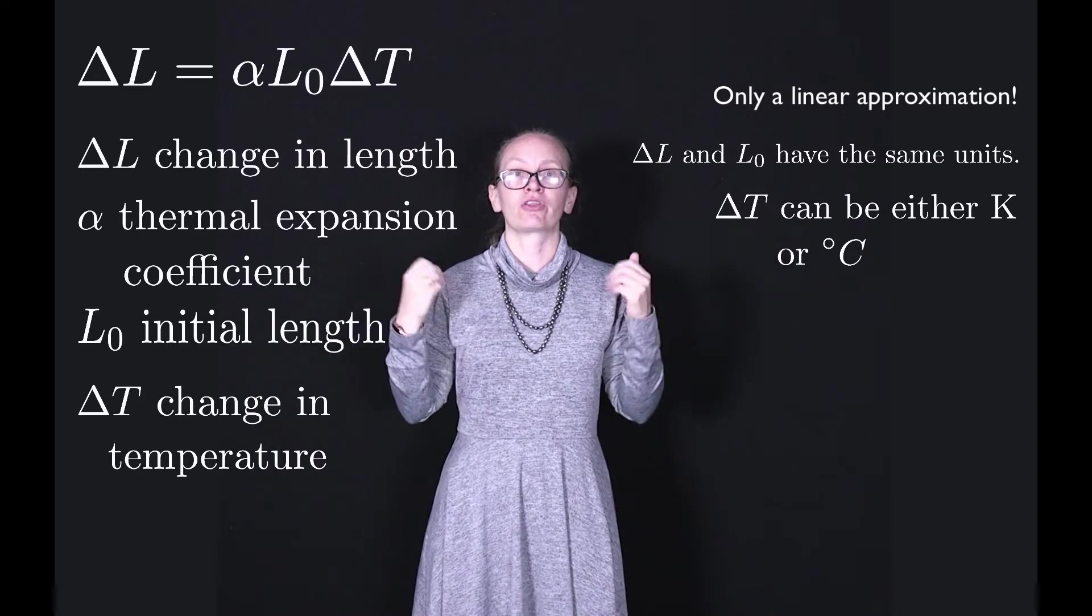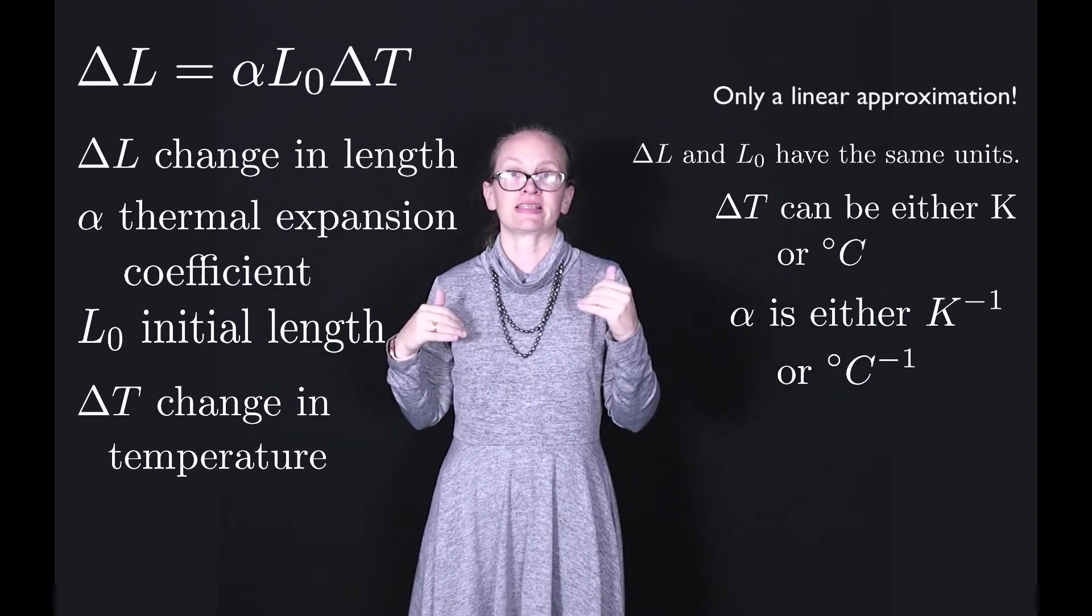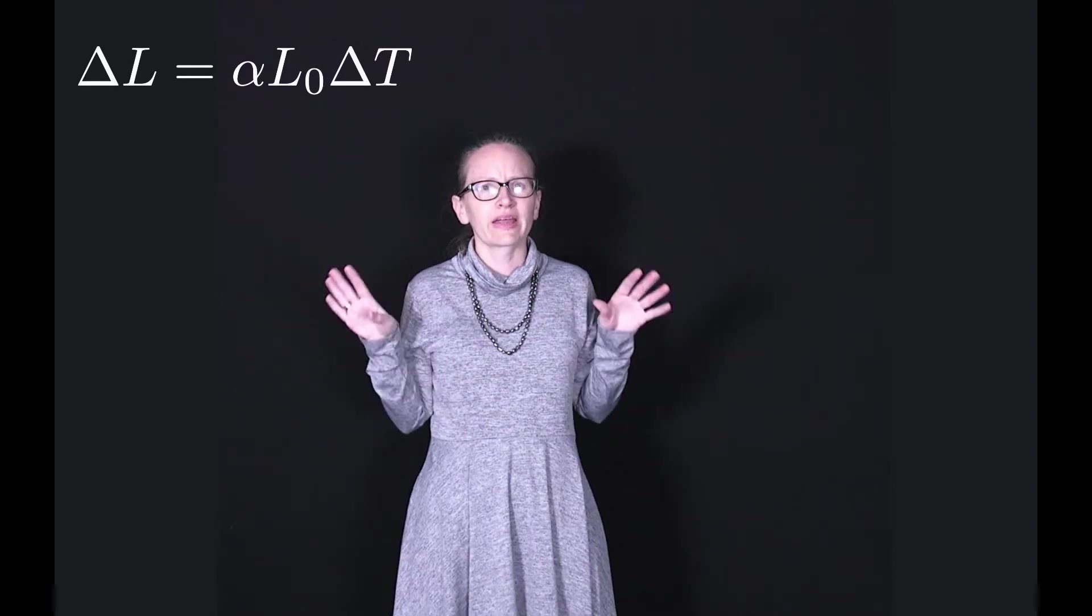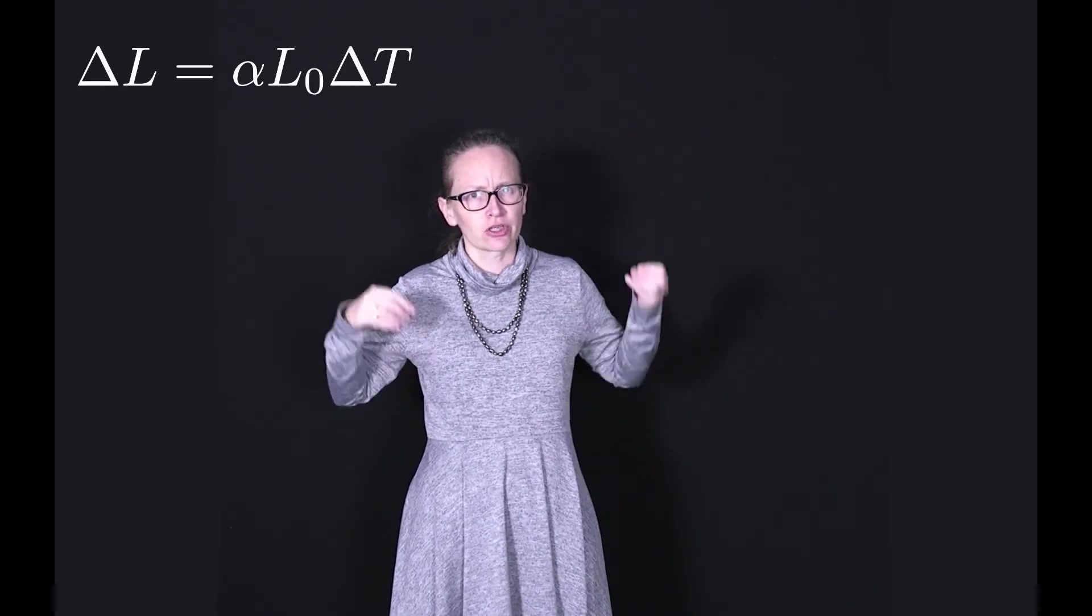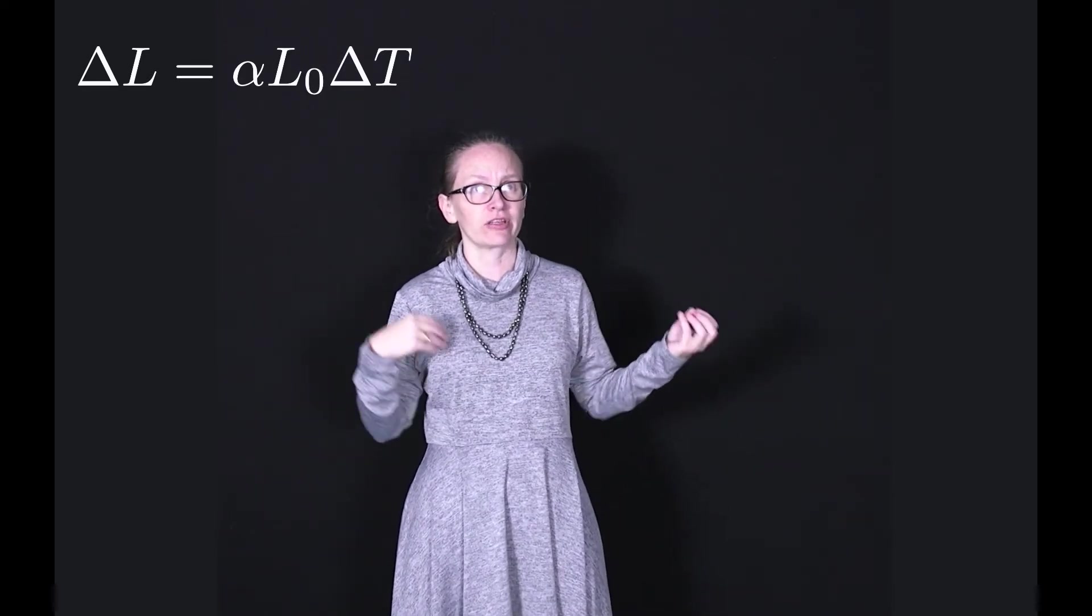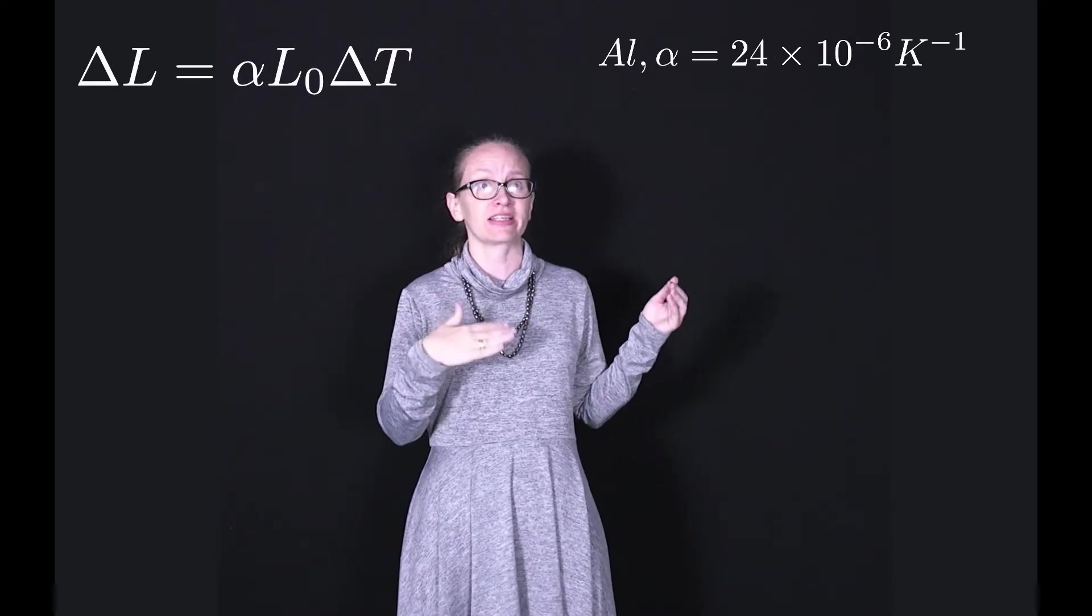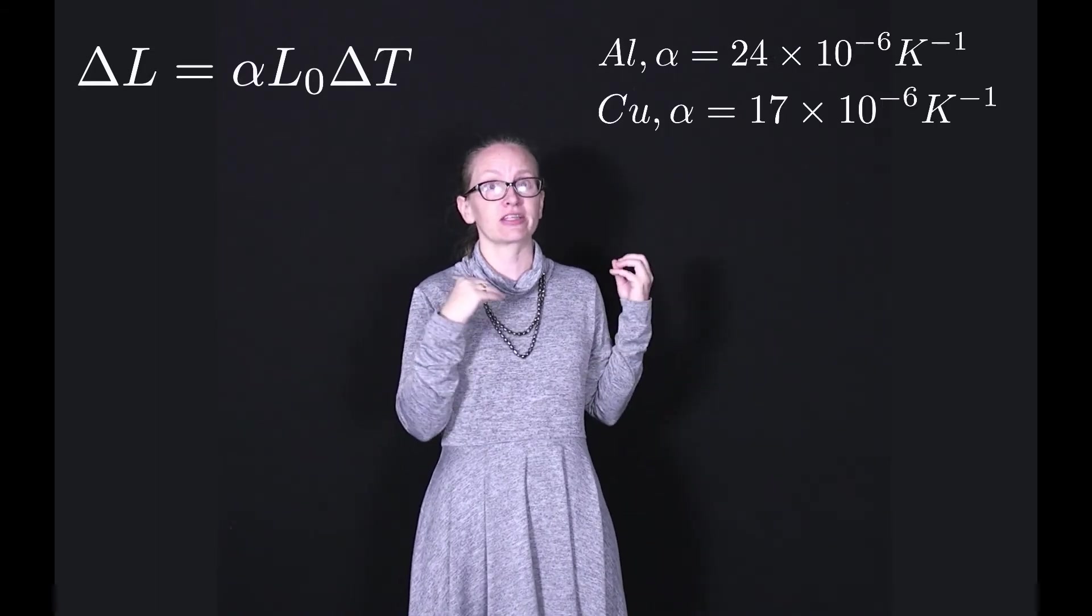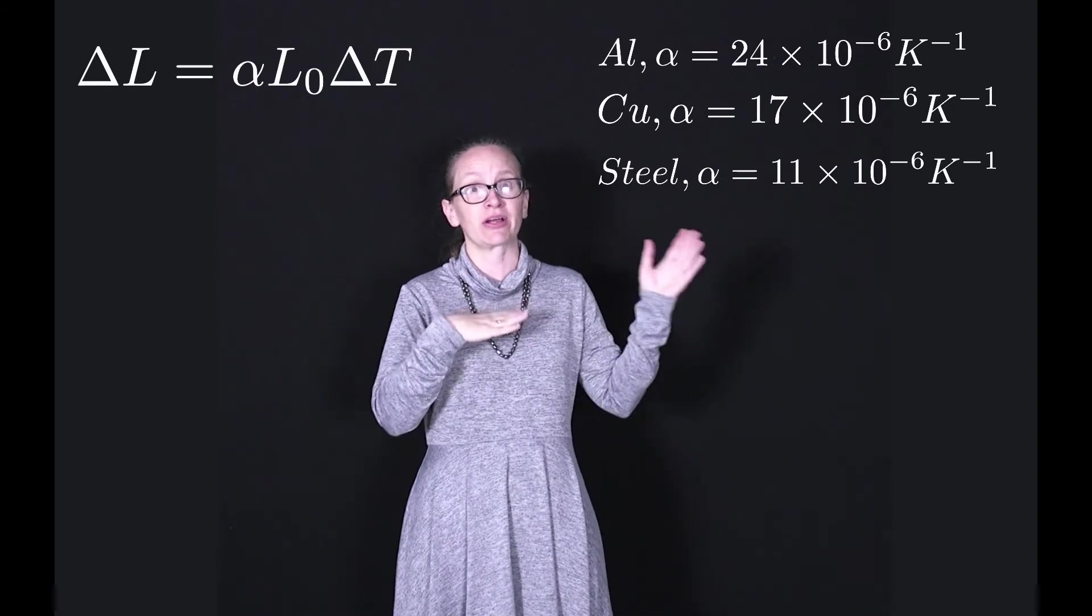For the thermal expansion coefficient, this is either per degree C or per Kelvin. Both of these are correct. These thermal expansion coefficients are different for different materials. Metals typically have a relatively large thermal expansion coefficient. For example, aluminium is 24 × 10⁻⁶ per degree C or per Kelvin. Copper is 17 × 10⁻⁶ per degree C. Steel is 11 × 10⁻⁶ per degree C.